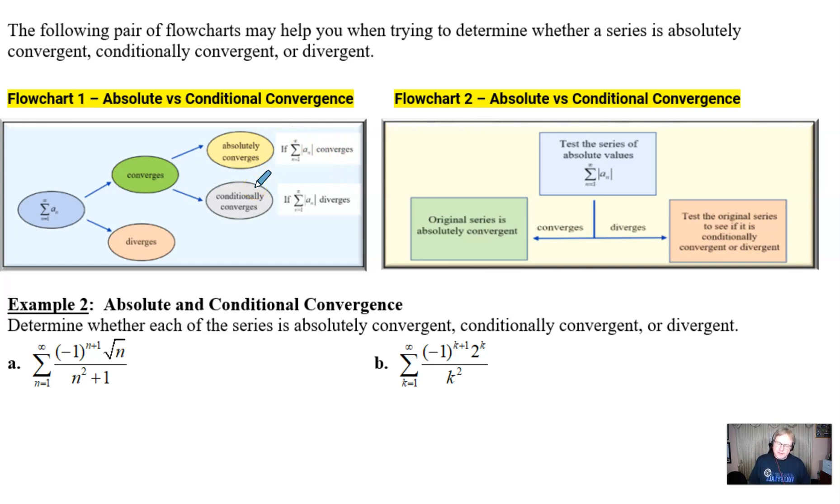Flowchart 2 a little bit more streamlined as you can see begins with looking at the summation of the absolute value and then basically a fork in the road occurs. If that particular absolute value summation converges the problem is done because at that point you can state that the original series absolutely converges. However if that summation of the absolute value diverges then we just go back and we test the original series to see if it conditionally or absolutely converges.